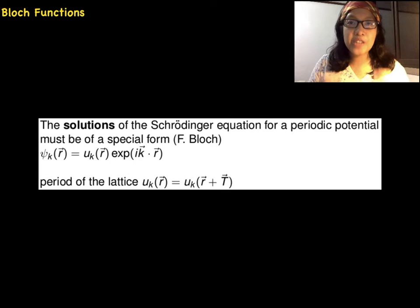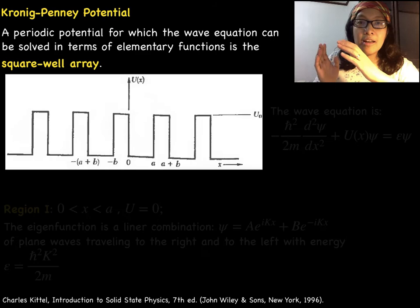Now we are near the objective which is to discuss the Kronig-Penney potential model. We will need the so-called Bloch functions. Bloch proves the important theorem that the solutions of the Schrödinger's equation for a periodic potential must be a product of a plane wave and a function with the periodicity of the crystal. Uₖ(r) has the periodicity of the crystal lattice.